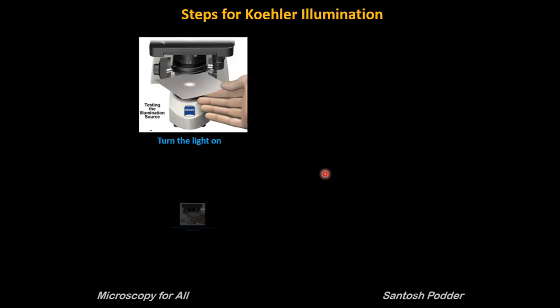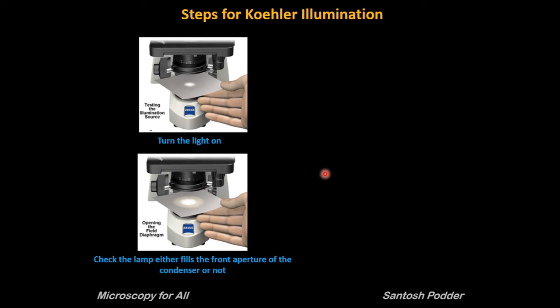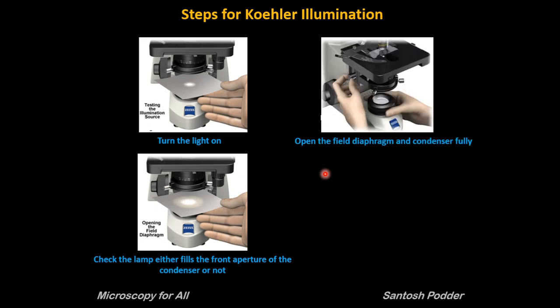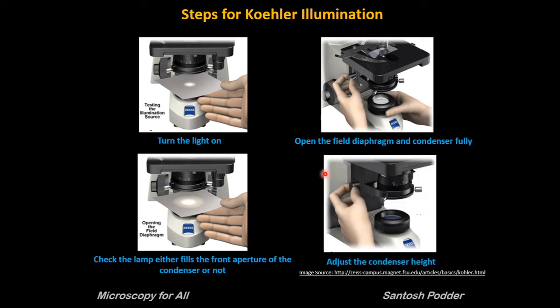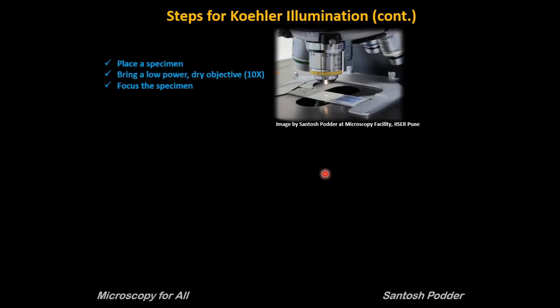We will now learn how to correctly set the microscope for Köhler illumination in a few simple steps. First, turn on the light and check the lamp to see whether it fills the front aperture of the condenser — you can use a sheet of paper placed in front of the condenser front aperture to see this. Then open the field diaphragm and condenser fully and adjust the condenser height, bringing the condenser as close as possible to your sample, perhaps within one to two millimeters. Then place a specimen and load a low-power objective, preferably 10x, and focus the specimen using the system's fine and coarse adjustment knobs.